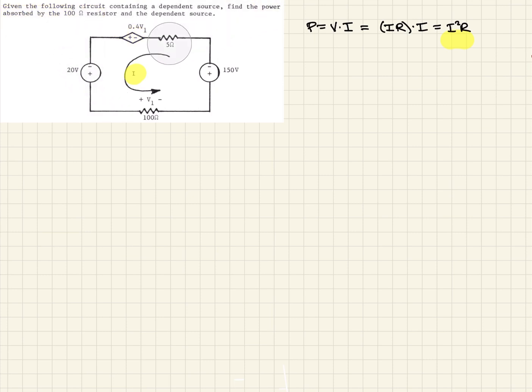So let's look at this. We're going to go around the loop and determine the equation for all the voltages summed around the loop. Remember, they should equal zero. We're going to start at this corner right here and go in this direction. The first item we see is this voltage source here, and it's 20 volts.